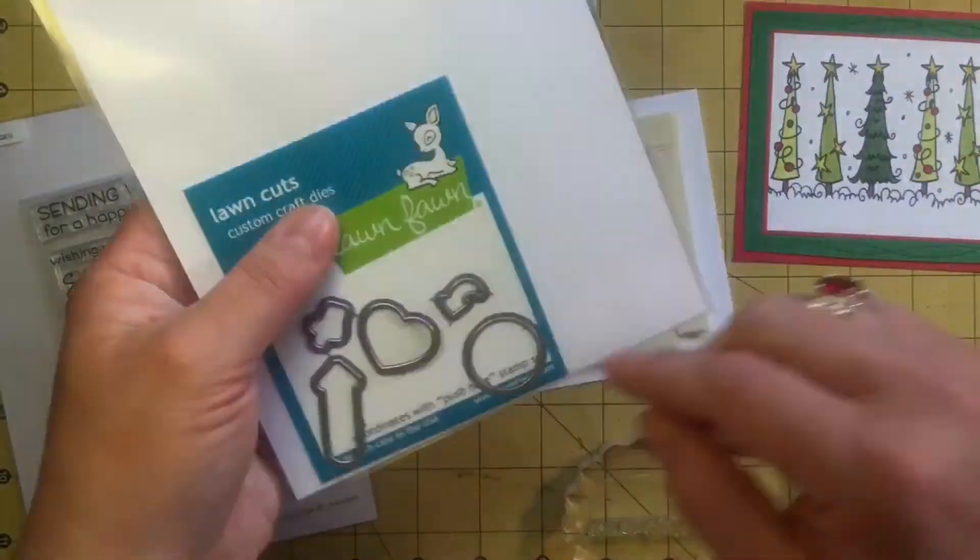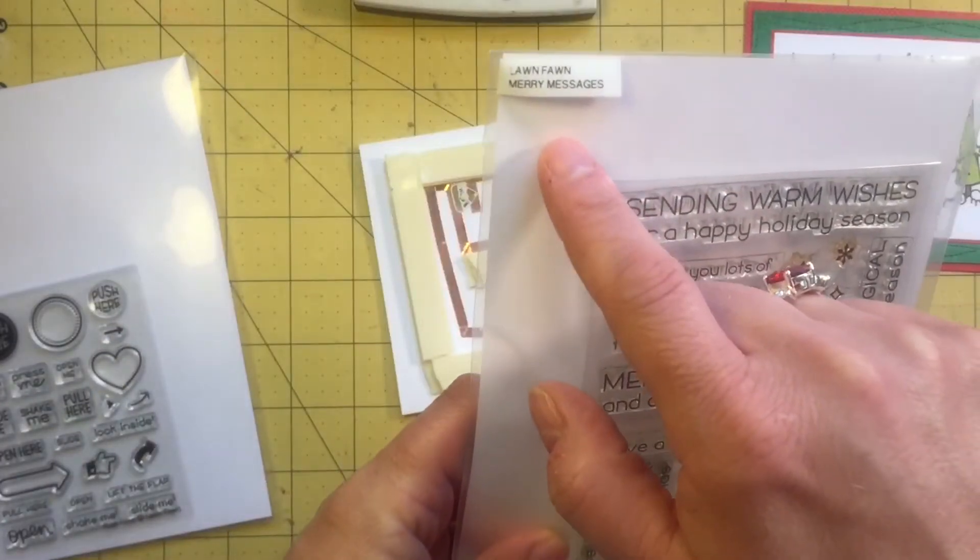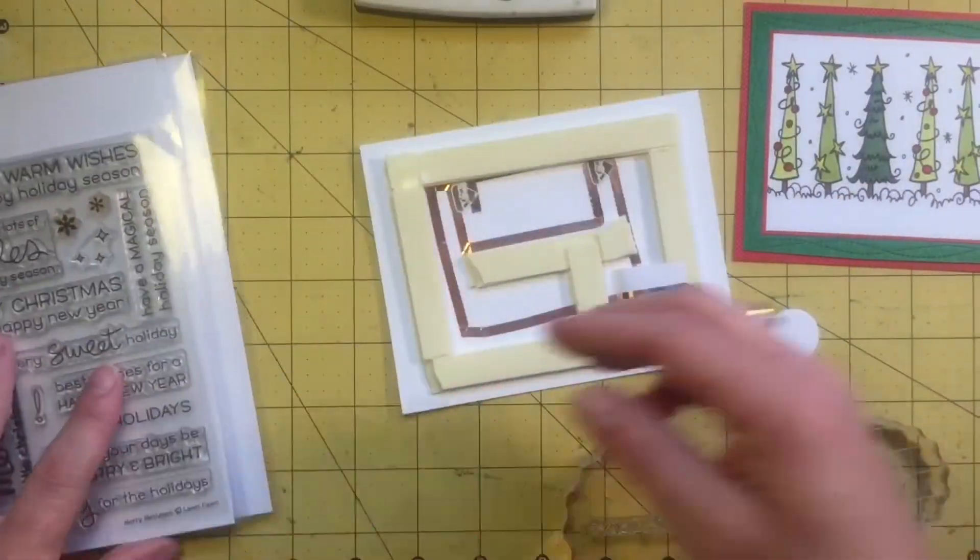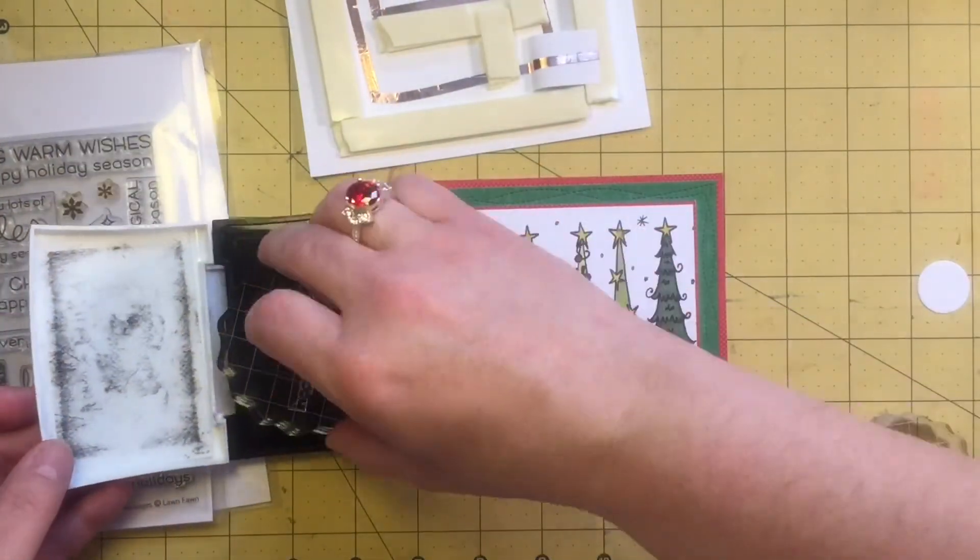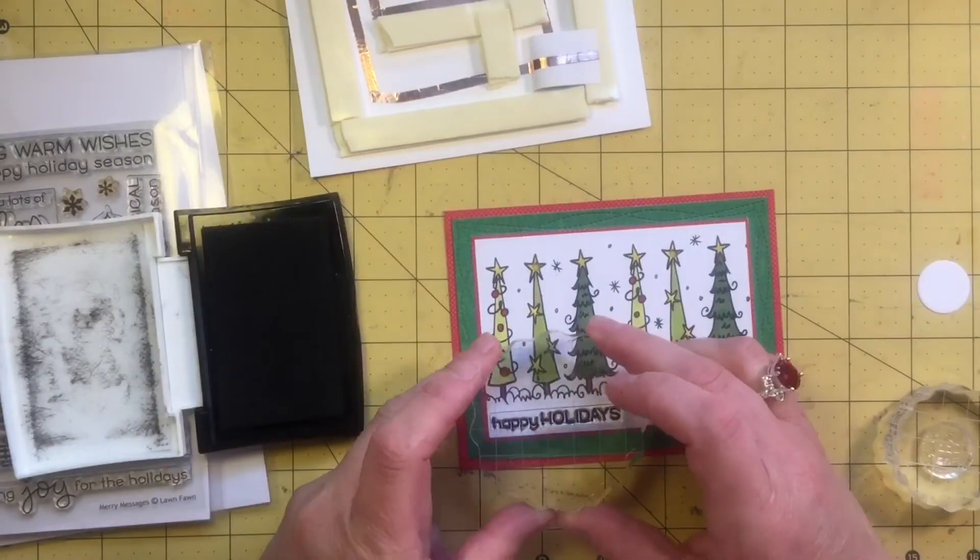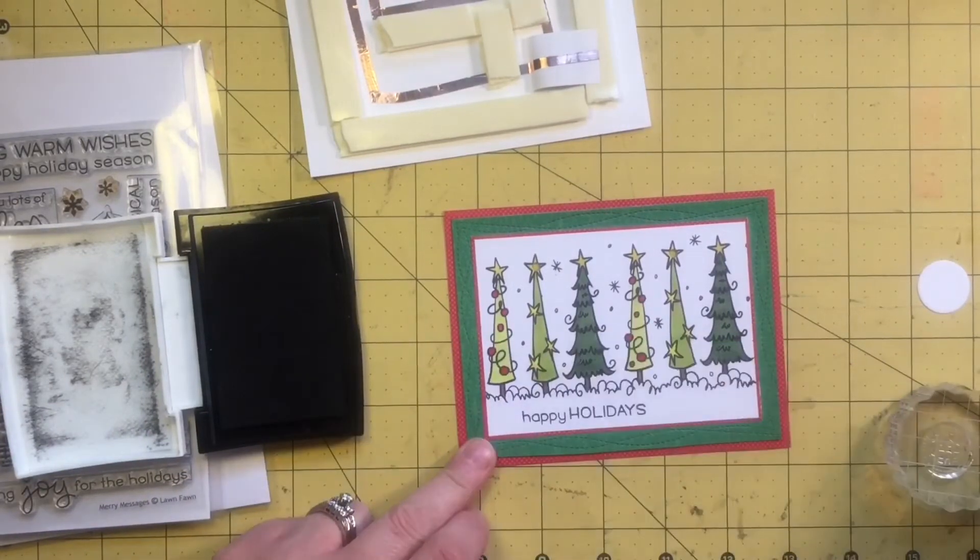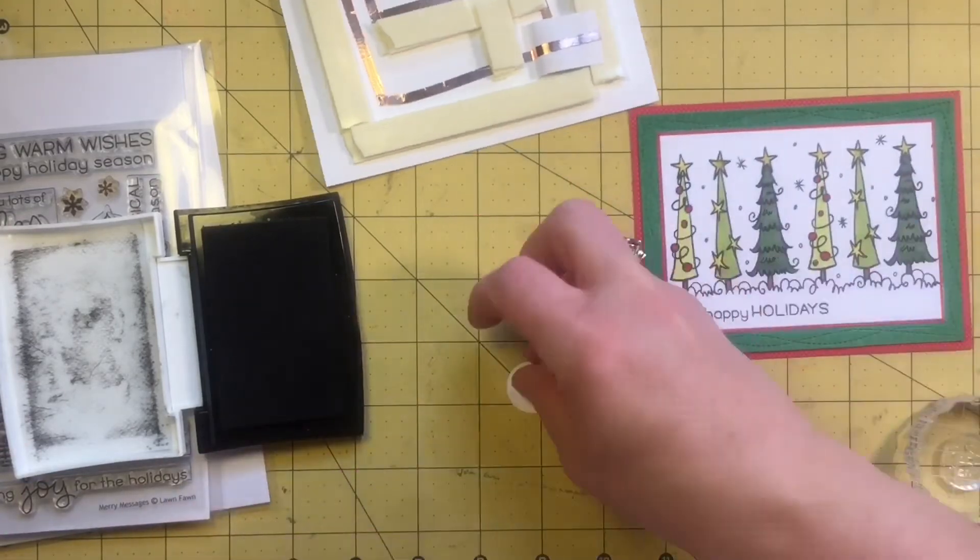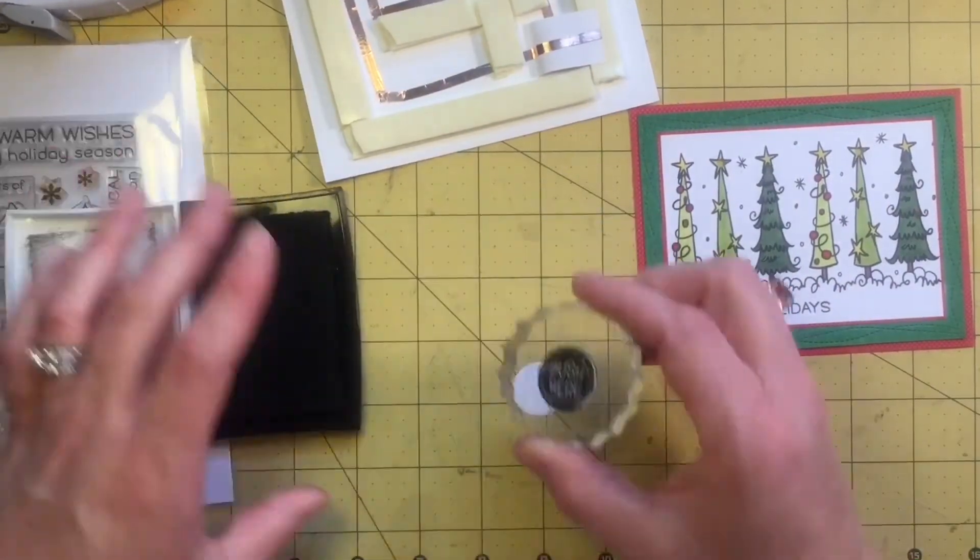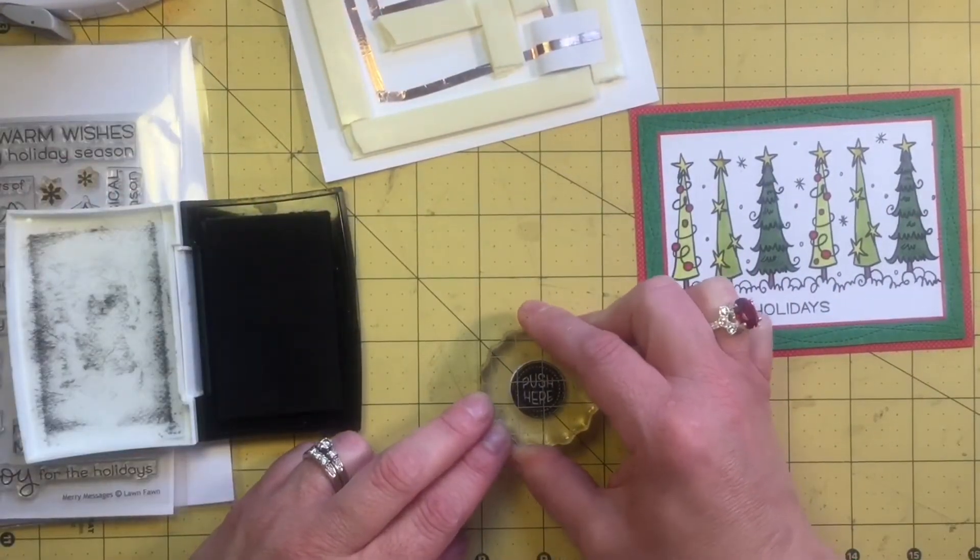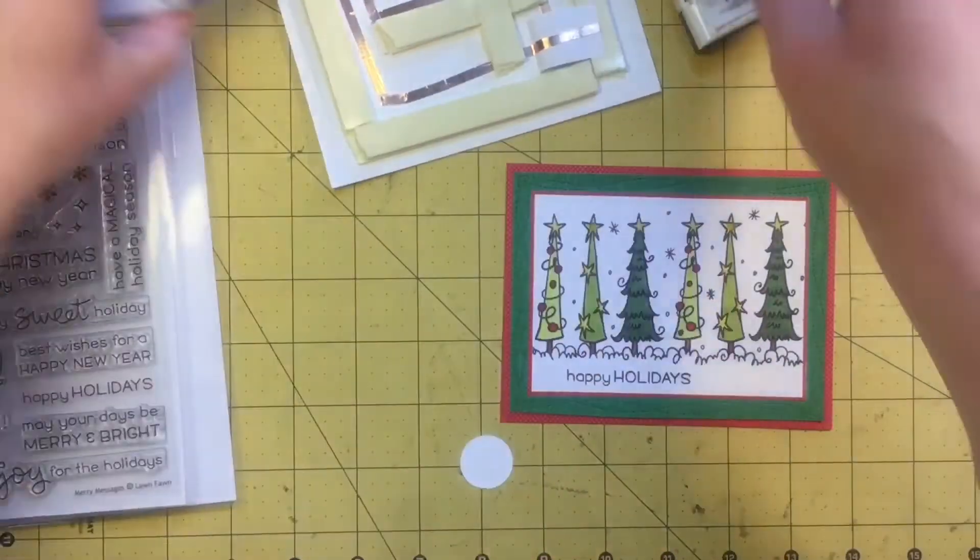Here, I'm going to show you that I'm using some stamps to finish off the card. They are both from Lawn Fawn, the Push Here and the Merry Messages. I picked Happy Holidays. I didn't want to really do Merry Christmas because it's just trees, so I wanted to make it a little bit more general. I'm going to temporarily tack this circle down so I can do the push here. I got it off a little center, but that's okay. It just means it's handmade.